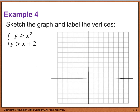Example 4 says to sketch the graph and label the vertices. I'm given y is greater than or equal to x squared. Graphing this parabola: it hits at (0, 0), and if x equals 2 that gives y equals 4, and x equals negative 2 also gives y equals 4. It is a solid line. Then for y is greater than x plus 2, I get a y-intercept at 2. I plot a few points and draw a dashed line.